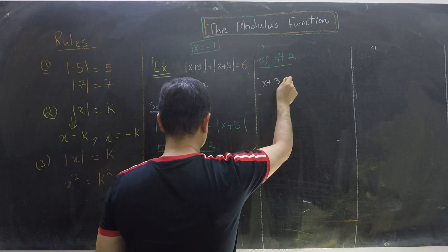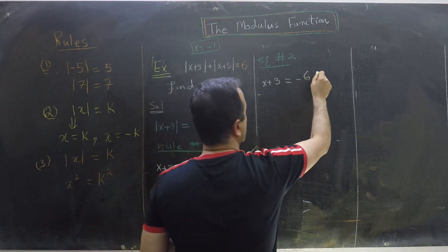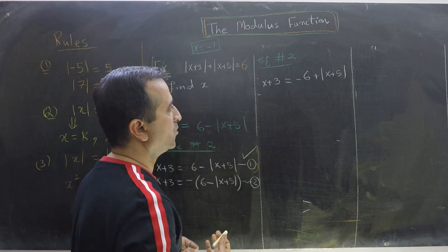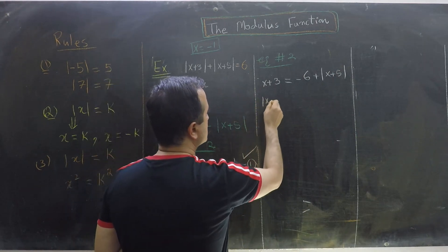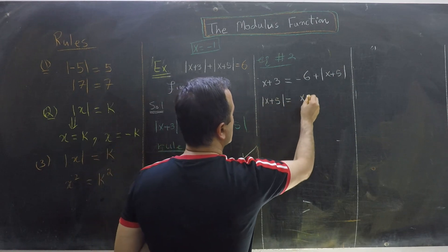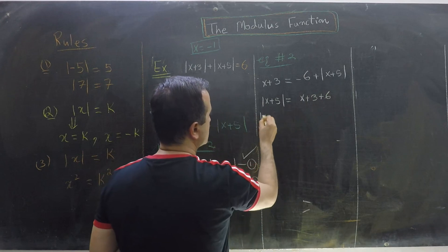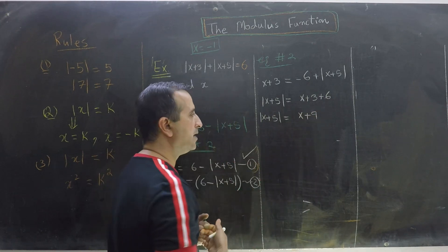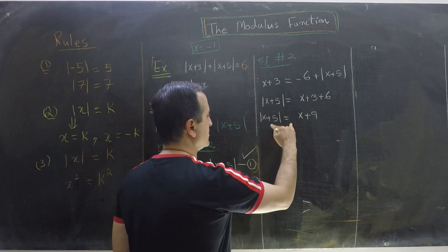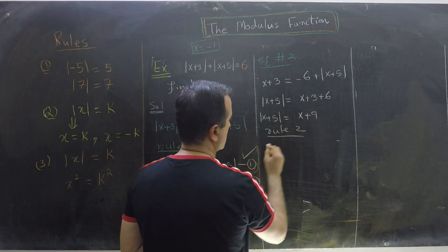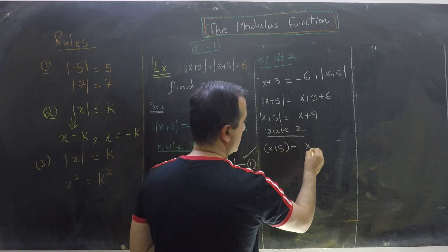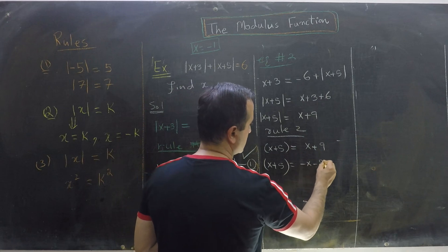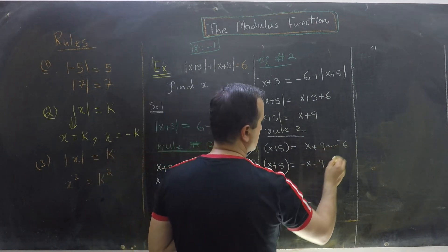Simplifying Equation 2: x plus 3 equals minus 6 plus mod of x plus 5. Rewriting so the mod is on the left hand side: mod of x plus 5 equals x plus 3 plus 6, which gives mod of x plus 5 equals x plus 9. Applying Rule Number 2 gives two more equations: x plus 5 equals x plus 9 — Equation 6 — and x plus 5 equals minus x minus 9 — Equation 7.